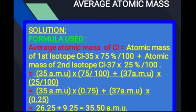اب آپ ready ہیں: atomic mass chlorine-35 کو multiply کریں 0.75 سے — answer آیا 26.25 — اور atomic mass chlorine-37 کو multiply کریں 0.25 سے — answer آیا 9.25۔ دونوں کو plus کریں تو answer آتا ہے 35.50۔